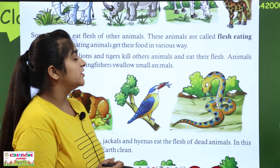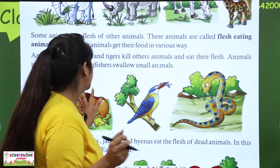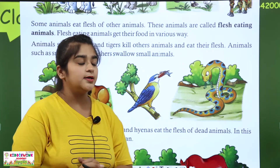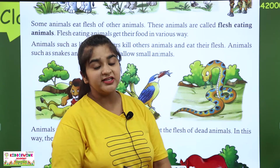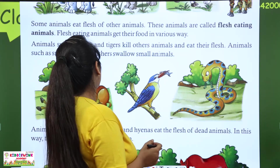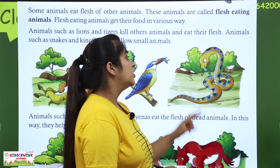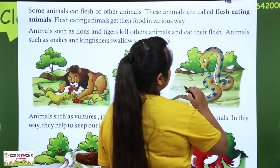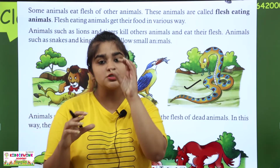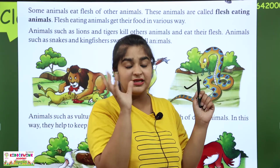Flesh-eating animals get their food in various ways. Animals such as lion and tiger kill other animals and eat their flesh. Animals such as snakes and kingfisher swallow small animals. Snakes eat frogs and insects — they eat their flesh as well.